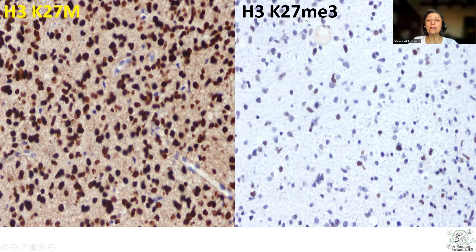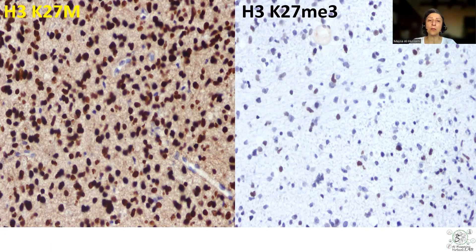Whereas the H3K27ME3, the trimethylation, the altered status would be interpreted by the presence of negative or weak staining in the tumor cells, in the presence of a positive internal control. So they are essentially the complete opposite of each other. When both patterns are present, this is supportive or even diagnostic of diffuse midline glioma.